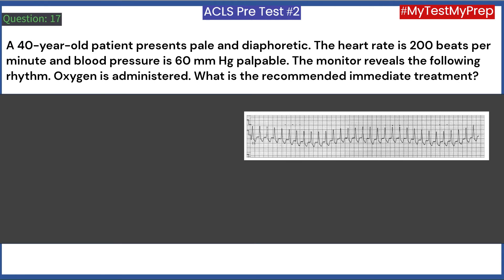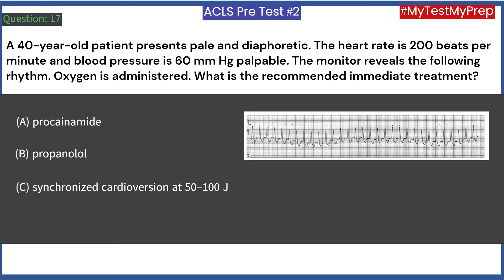A 40-year-old patient presents pale and diaphoretic. Heart rate is 200 beats per minute and blood pressure is 60 mmHg palpable. The monitor reveals the following rhythm; oxygen is administered. What is the recommended immediate treatment? A. Procainamide. B. Propranolol. C. Synchronized cardioversion at 50 to 100 J. D. Verapamil. Answer: C. The above rhythm shows supraventricular tachycardia.